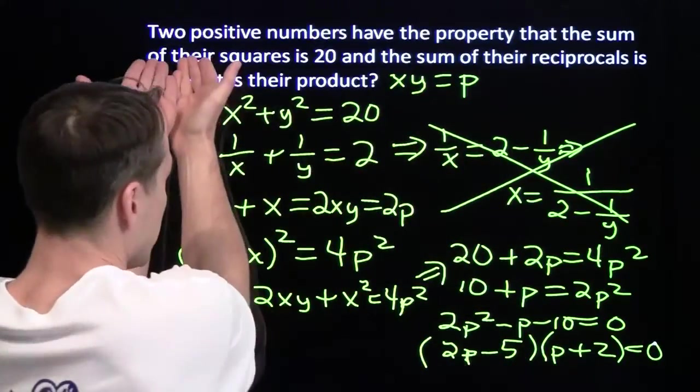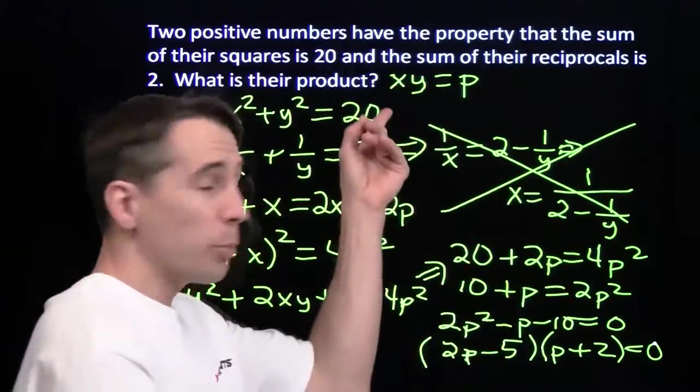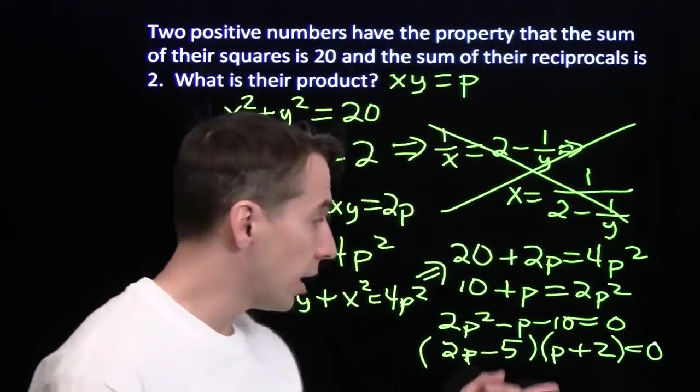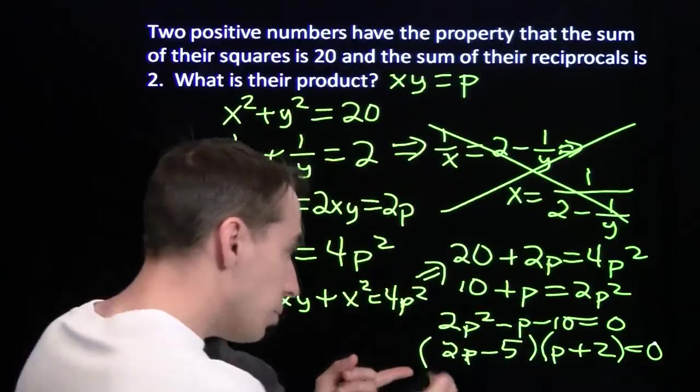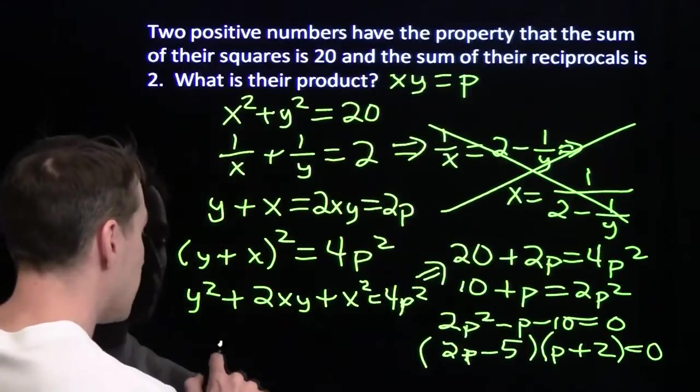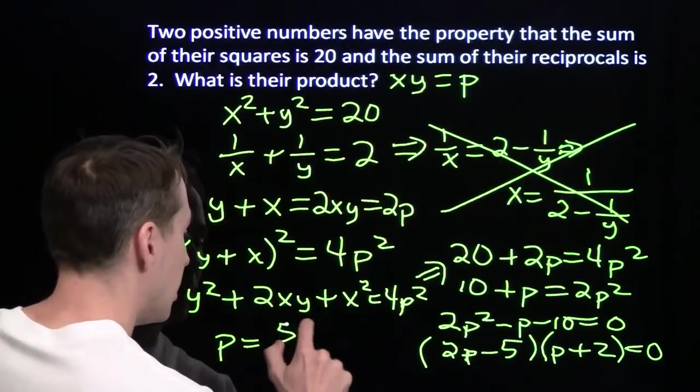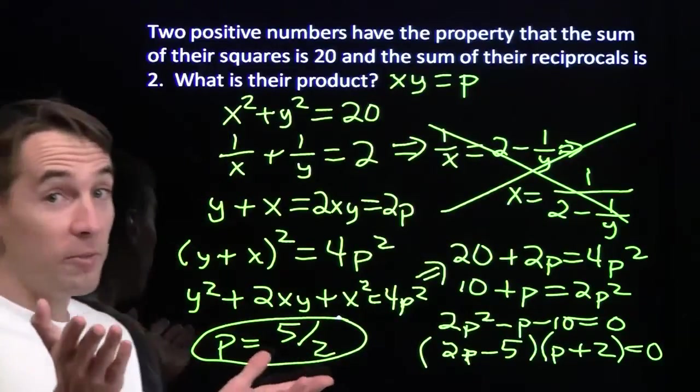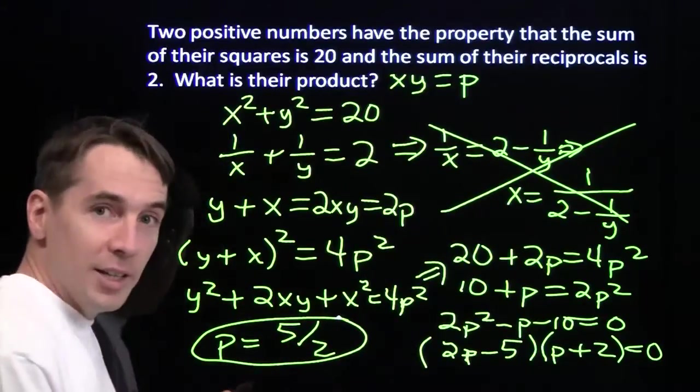Go back and read the question. Two positive numbers, p is the product of x and y. You multiply two positive numbers, you get a positive product. We can't have a negative answer. So our answer must come from this factor right here, 2p minus 5 equals 0. That tells me that our product is 5 halves. And once again, we've found the answer without finding the answer.